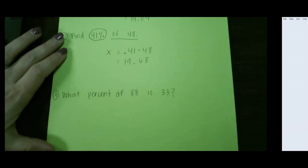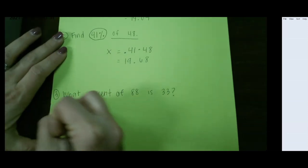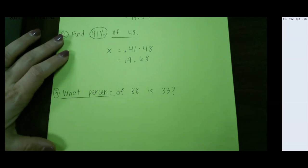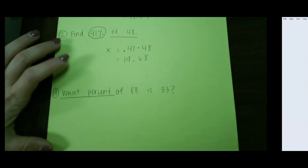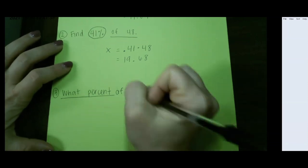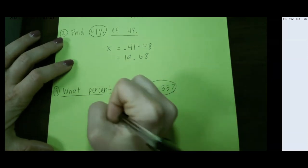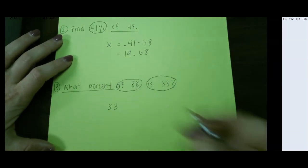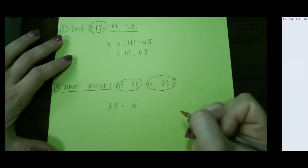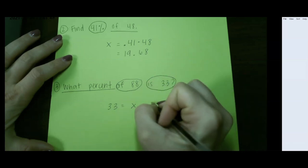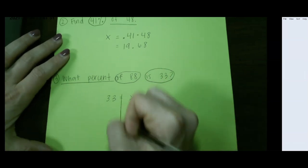For our last example, we look here, looks like we're missing our percent. This is the easiest one to figure out because we see no percent signs. So I have of 88 and is 33. So 33 is our is, we don't know the percent, and 88 is our of. So here we have to solve this like a one-step equation.